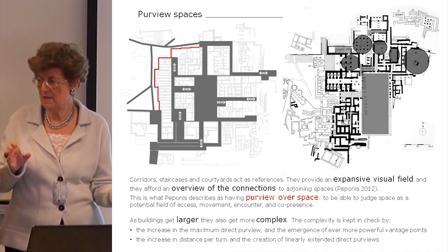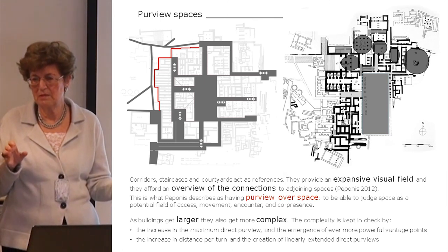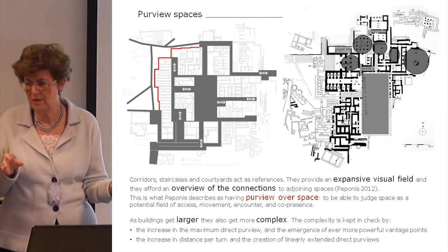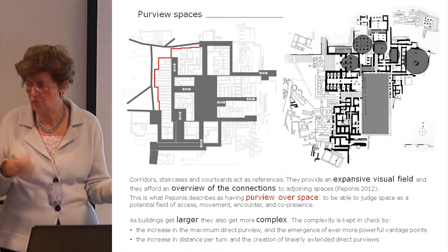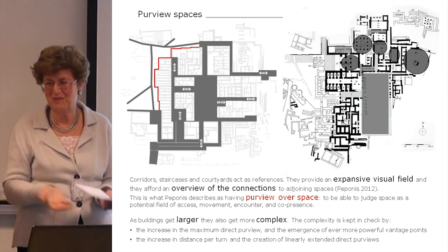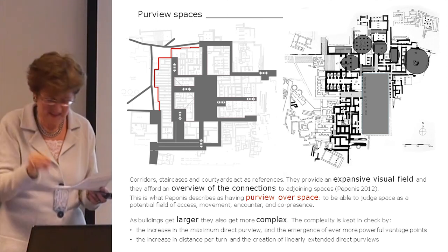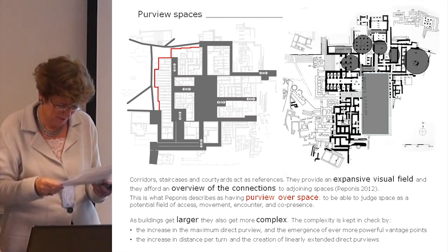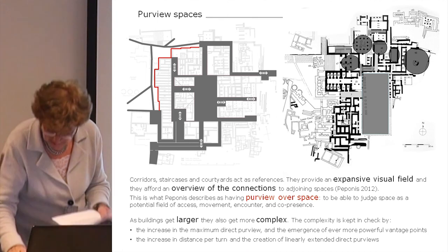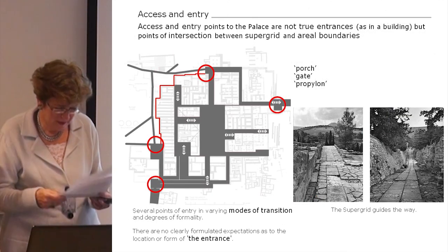Overview areas can act as a skeleton for a cognitive map. I realized that this is the way I studied Minoan architecture — I tried to remember the plan of the palaces by using exactly those same points of reference. So that was Peponis. Now we go on to access and entry.